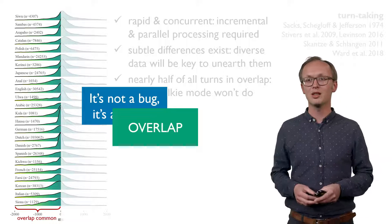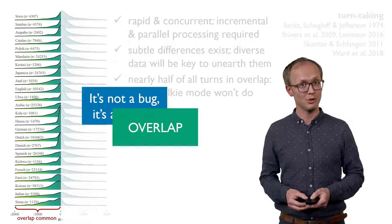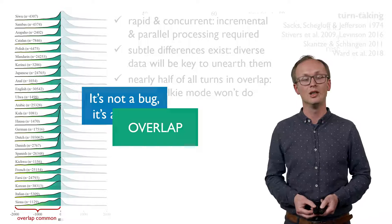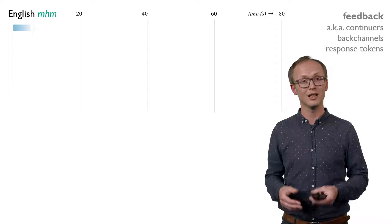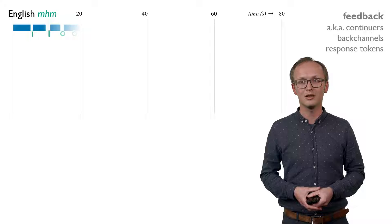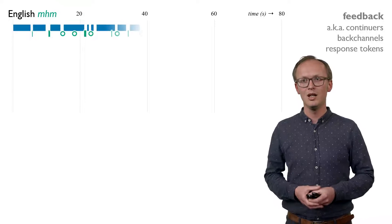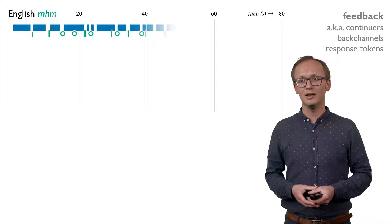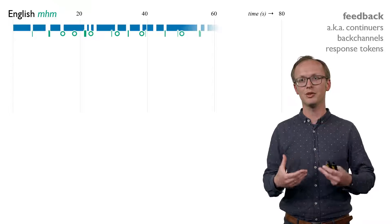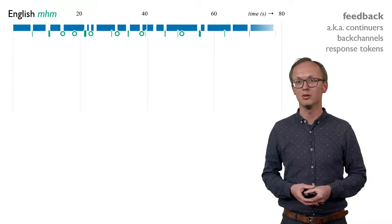Some types of turns seem more prone to overlap than others. Indeed, sometimes the point of an overlapping mm-hmm might be precisely to signal the expectation that the other can go on talking. This brings us to another domain that we study in our paper: feedback. Part of what makes a story a story is that there's an active listener, dutifully producing response tokens like mm-hmm, yeah, okay, and so on.